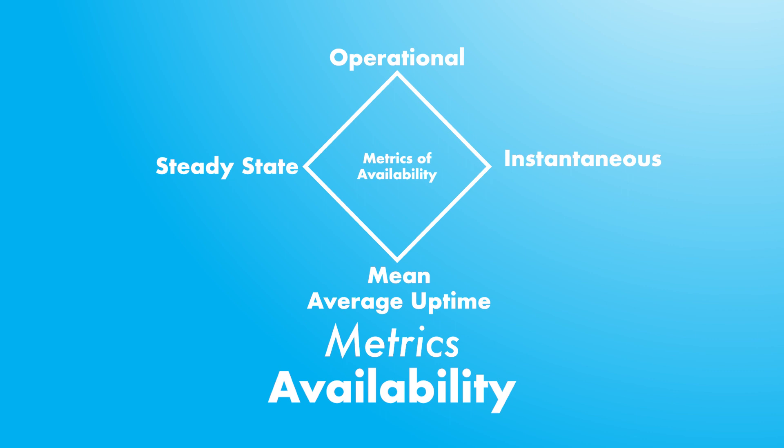There are many possible metrics for availability, including operational availability, instantaneous availability, mean availability, and steady-state availability. Understanding their calculation and implications is very important for choosing which to integrate in your analysis.